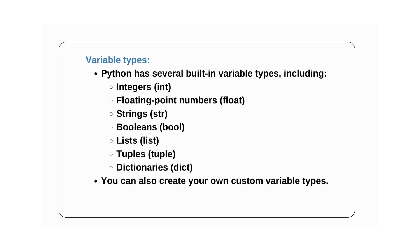Python has several variable types including integers, floating point numbers, strings, booleans, lists, tuples, and dictionaries. You can also create your own custom variable types, but those variable names should not conflict with keywords already in Python.